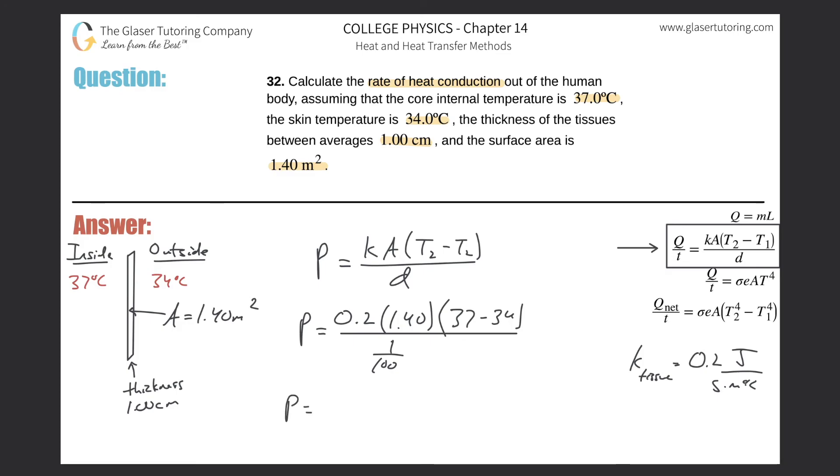So it's 0.2 multiplied by 1.4 multiplied by 3, then divided by... oh no, excuse me, not divided by 100. Whoa, one over 100, right? Which would be essentially the same thing as multiplying by 100. My goodness. 84.